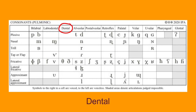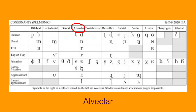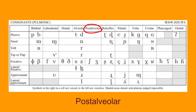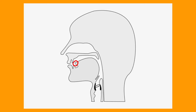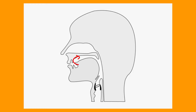Dental, which refers to placing the tip of the tongue at the upper teeth. Alveolar, which refers to placing the tip of the tongue at the alveolar ridge. Postalveolar, which refers to placing the tip of the tongue at the back of the alveolar ridge. Retroflex, which refers to curling the tongue up and placing it between the alveolar ridge and the hard palate.